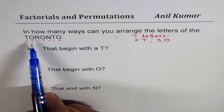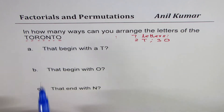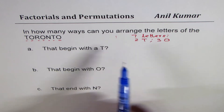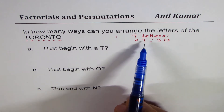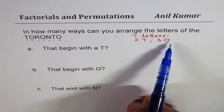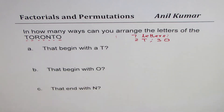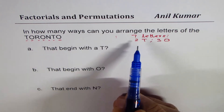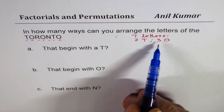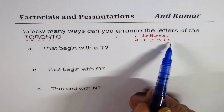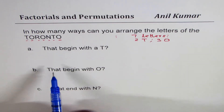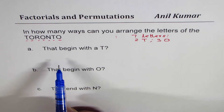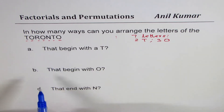As you notice, in Toronto we have seven letters — two T's and three O's — so there is a repetition. We have T twice and O three times. So let's try to see how to answer such a question.